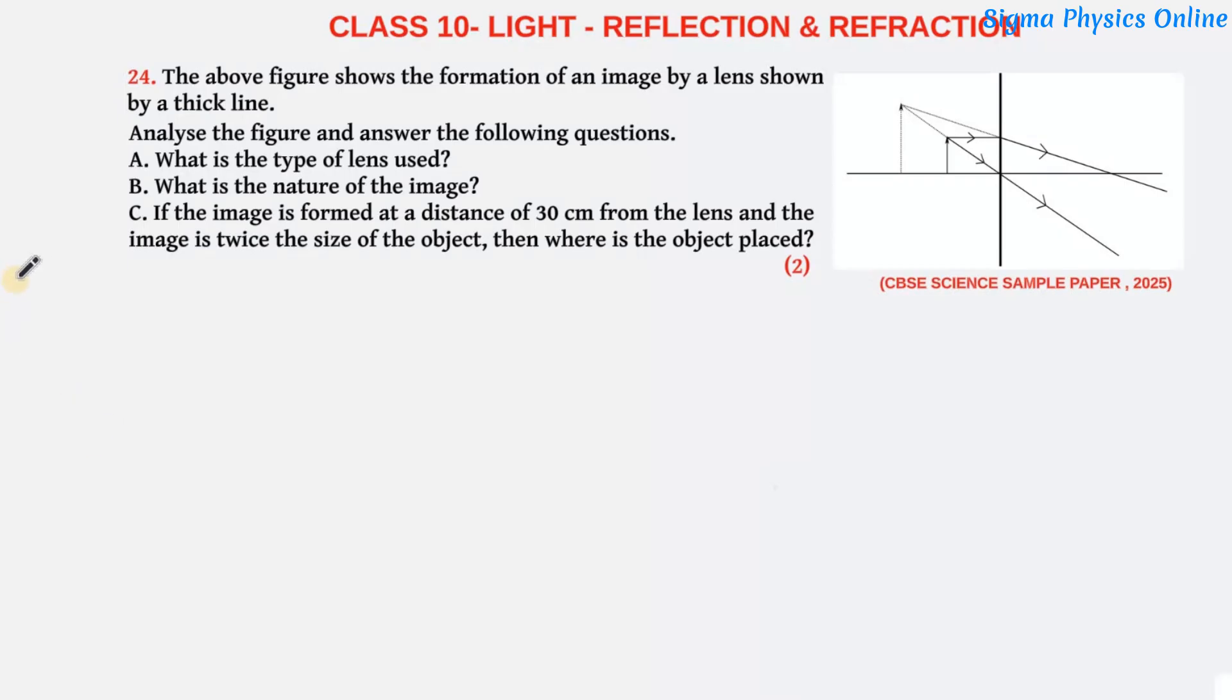So let's solve it. Let's understand the ray diagram. So here we have a lens which is placed, and in front of the lens this is the object which is placed.